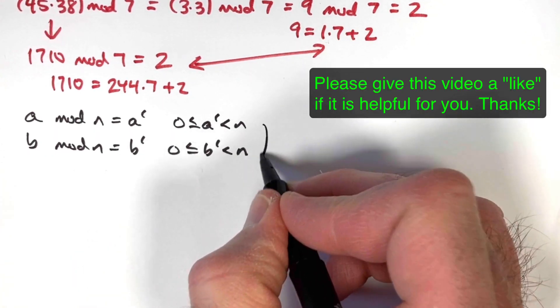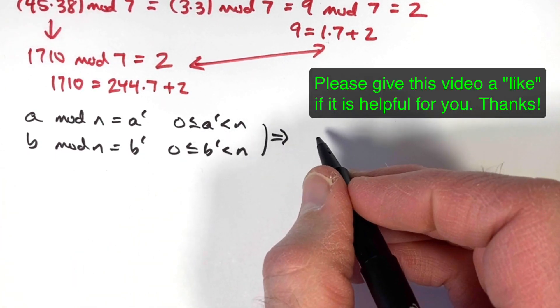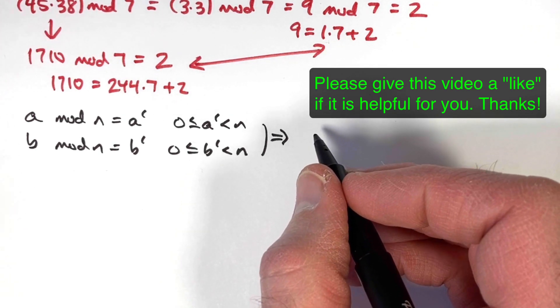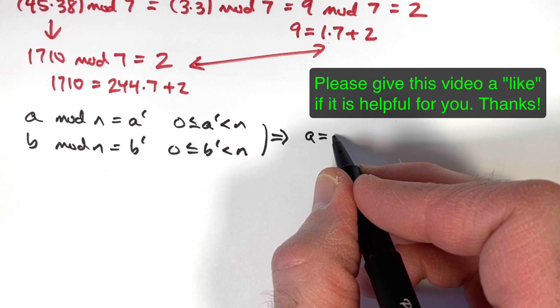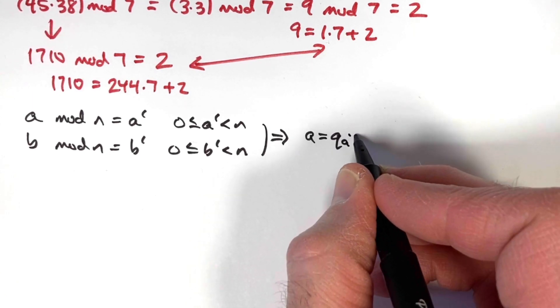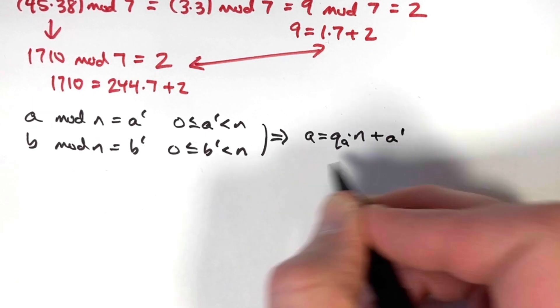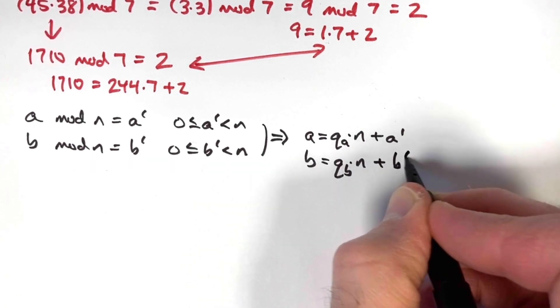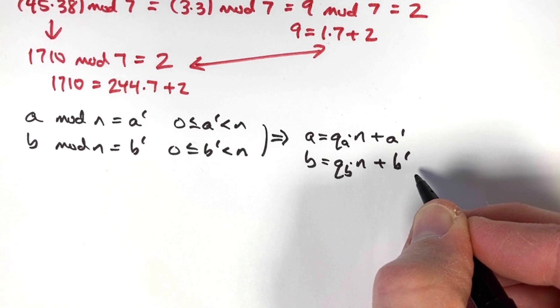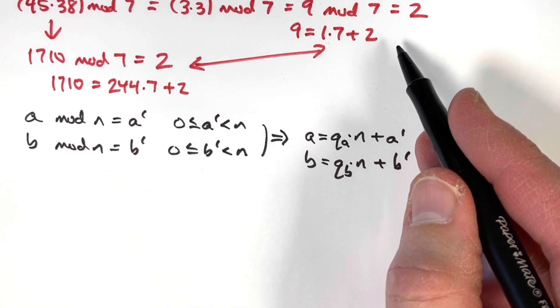What does this mean? This means there are some quotients, say call them q sub a and q sub b, such that a equals q sub a times n plus a prime, and b equals q sub b times n plus b prime. This is an abstract form of the particular kinds of examples that I wrote before.